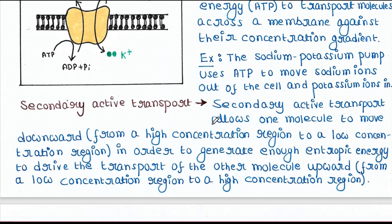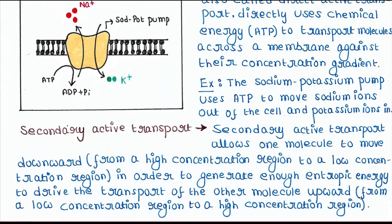Secondary active transport allows one molecule to move from a high concentration region to a low concentration region in order to generate enough entropic energy to drive the transport of another molecule upward — from a low concentration region to a high concentration region. So the energy source is different in secondary active transport: it first transports one molecule from high to low concentration, and during this movement entropic energy — the energy generated from molecular disorder or randomness — is produced, which is then used to transport the other molecule from low to high concentration. Energy is not directly coming from ATP here.